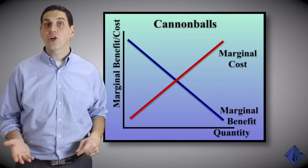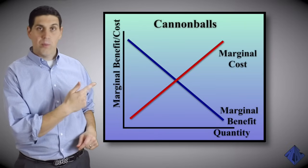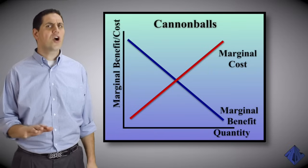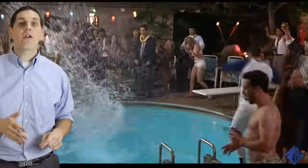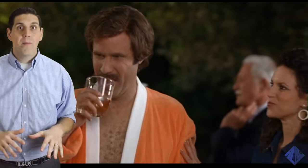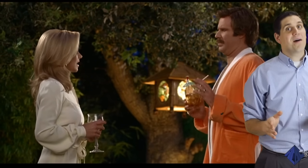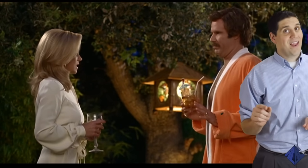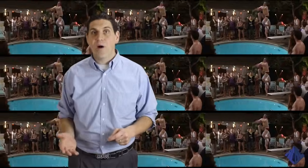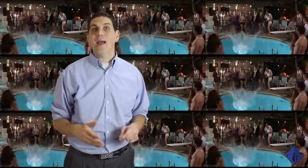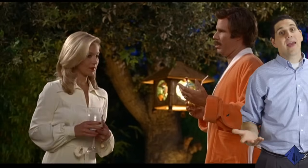The marginal cost curve for doing cannonballs is upward sloping. Wait, there's no cost for jumping into a pool. Well actually there is a cost — your opportunity cost. If you only do one or two cannonballs, the opportunity cost is still really low because you can still mingle and talk to people at the party. You'll still have time to make a move on the ladies. But if you do a hundred cannonballs, you won't have any time to actually enjoy the party, and all the ladies will think that you're totally crazy.